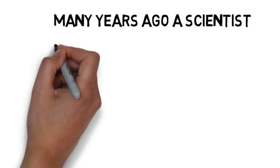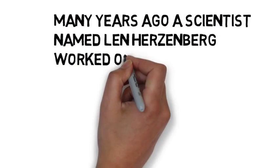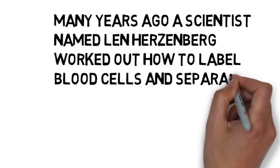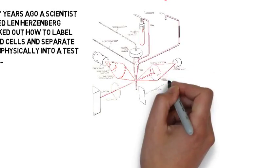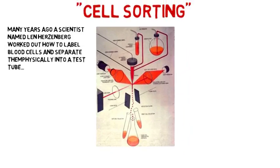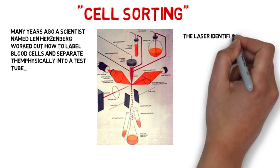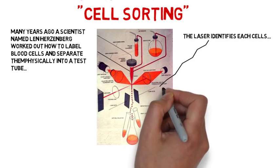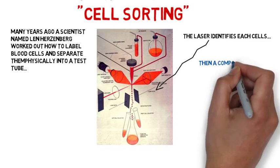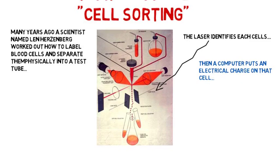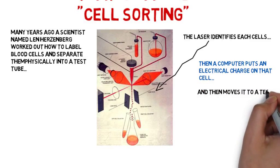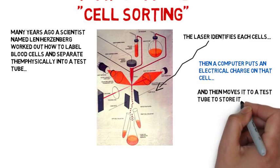Now, much of our knowledge about cells was developed by a scientist by the name of Lynn Herzenberg at Stanford University, who built an instrument specifically designed to work on white blood cells. He could identify special cells and then put an electrical charge on them and separate them into a test tube. This process allows scientists to study many of the properties of cells.